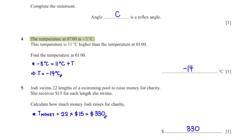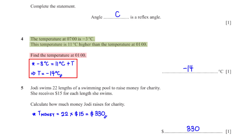The temperature at 7 o'clock is negative 3 degrees Celsius. The temperature at 7 o'clock is 11 degrees Celsius higher than the temperature at 1 o'clock. Find the temperature at 1 o'clock. We are told negative 3 degrees Celsius equals 11 degrees Celsius plus t. When we subtract 11 from both sides, we get t equals negative 14 degrees Celsius.